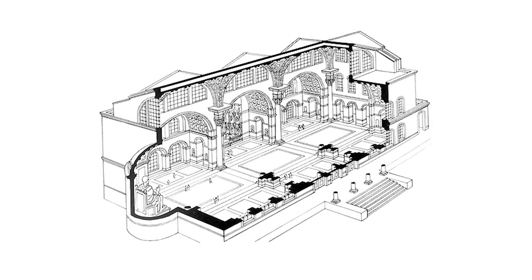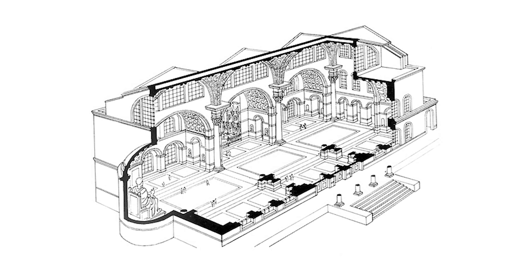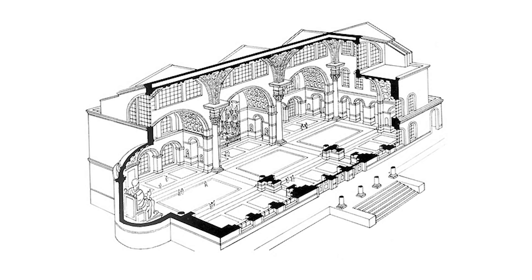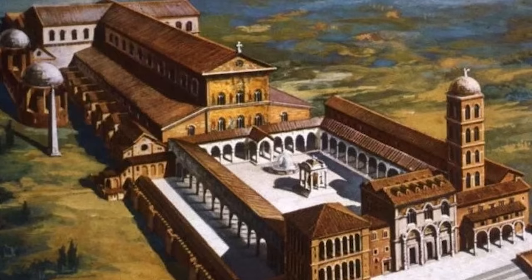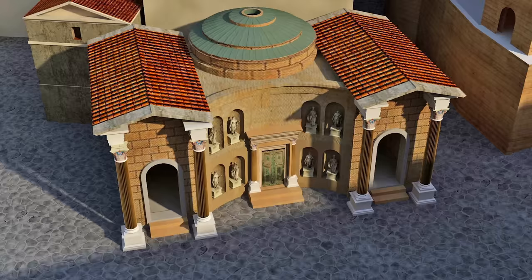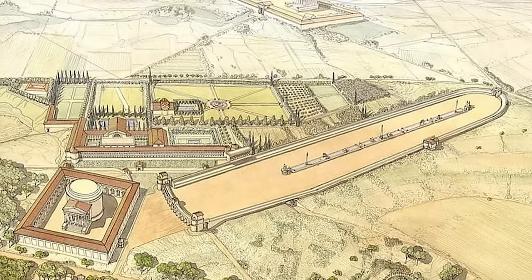A basilica was a rectangular building with a large central open space and often a raised apse at the far end from the entrance. It served a variety of functions, including a combination of courthouse, council chamber, or meeting hall. The Christians took over the form of the basilica, and many of the early Christian places of worship were based on it. Maxentius also built the Temple of Romulus, dedicated to his young son, and outside of Rome a large circus almost as long as the Circus Maximus, as well as his family tomb. These buildings still contained the known elements of the classical style.